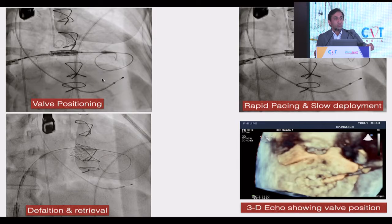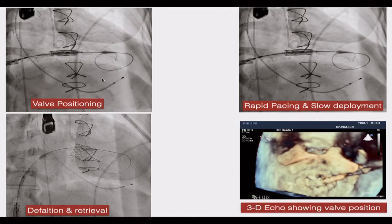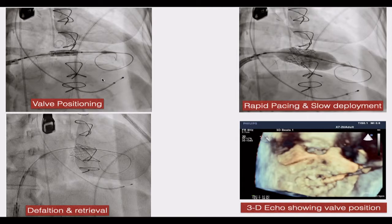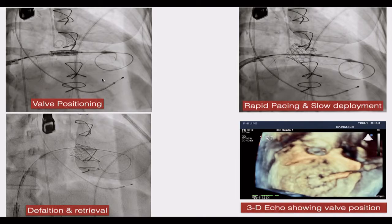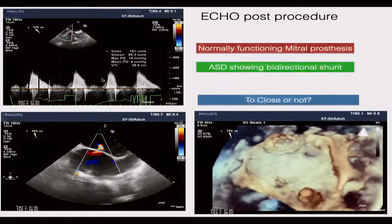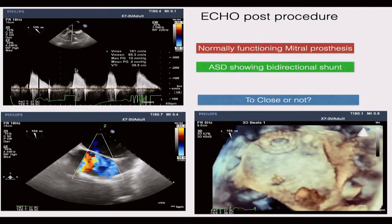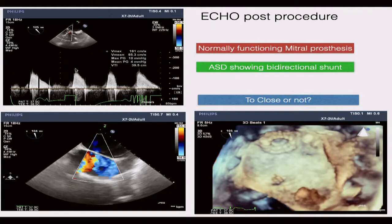For valve positioning, ensure the valve is not too atrial — if it is, the valve can migrate into the LA on the table or later. The valve should be more ventricular and we try to flare the LV end. We perform rapid pacing with very slow inflation, sometimes pushing the catheter down to make it 90 degrees to the plane of the mitral valve. 3D TEE is essential. Post-procedure echo shows a mean gradient of 4 mmHg, no paravalvular leak, no valvular leak.